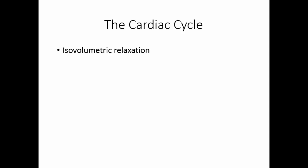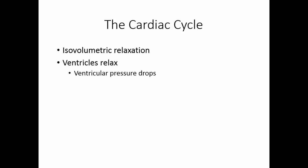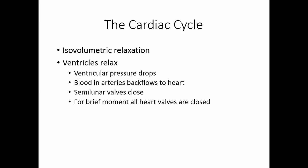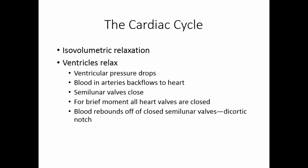We then have a period of isovolumetric relaxation. The ventricles begin to relax, ventricular pressure drops, and the blood that's been forced into the arteries tries to backflow into the heart. This is what causes the semilunar valves to close. Once again, all heart valves are closed and there is no change in the volume of the ventricles — isovolumetric relaxation. Because the blood rebounds off those closed semilunar valves, you sometimes pick up a little change in blood pressure called the dicrotic notch.